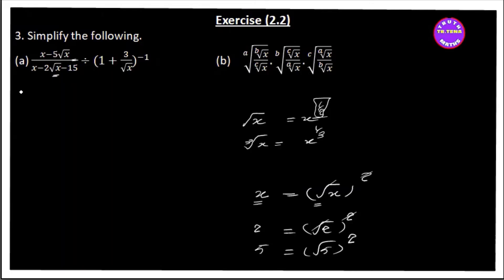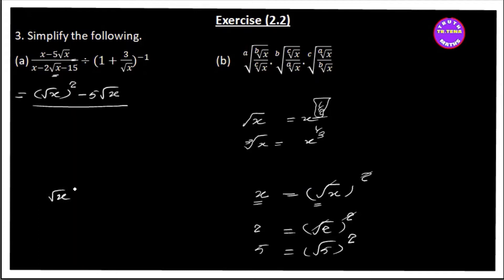So, x equals √x whole squared, meaning √x whole squared equals x. Now we substitute: we have 5√x, and the full expression becomes (√x)² minus 2√x minus 15. We need to simplify this expression: (√x)² minus 2√x minus 15.